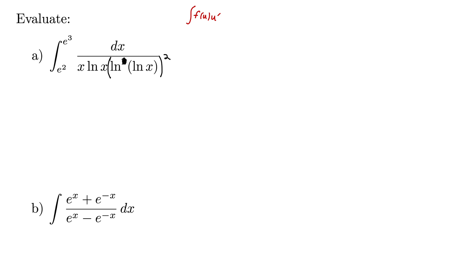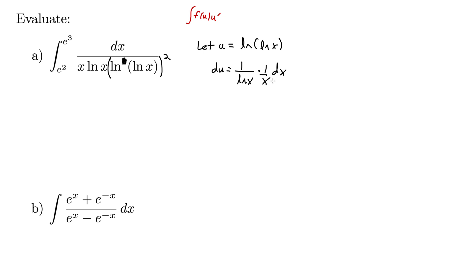We just need to pick a clever u so that our du is also inside the integral. Maybe pause the video and see if you can figure out what to choose for u. What if we let u equal natural log of natural log of x? Then du is 1 over natural log x times the derivative of the inside by the chain rule, times 1 over x dx — which is exactly what we have in the integral.